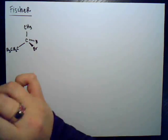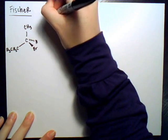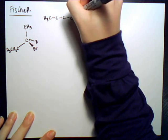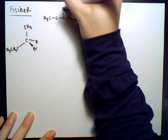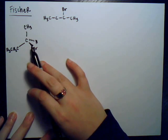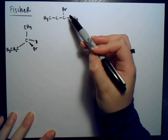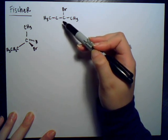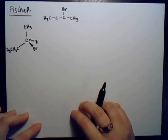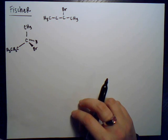If we were to draw this out in normal notation, it would look like this. The only thing not drawn in is the hydrogen also attached to the carbon — the carbon is attached to two other carbons and a bromine. Now what we do is arrange this molecule in a way called a Fischer projection.